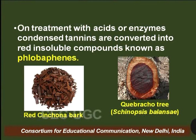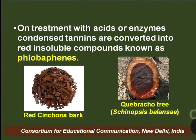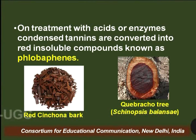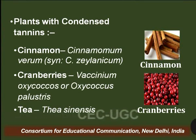When condensed tannins are treated with strong acids or strong enzymes, they get converted into a red-colored insoluble material known as phlobaphens. These phlobaphens are responsible for the reddish-brown color of certain drugs like cinchona bark, cinnamon, and quebracho tree bark. Tea is a rich source of catechins and therefore has numerous flavan-3-ol derivatives.